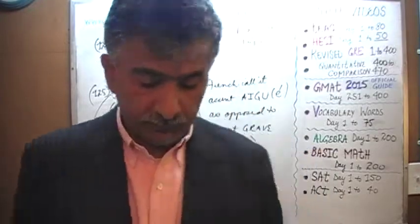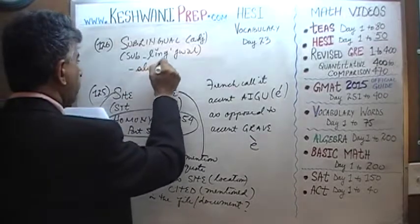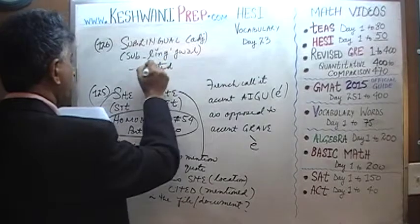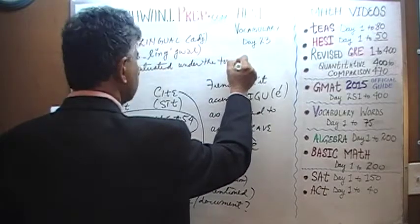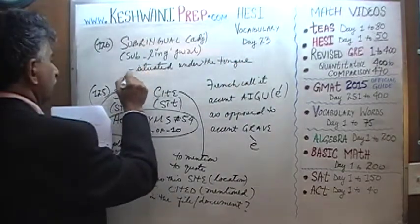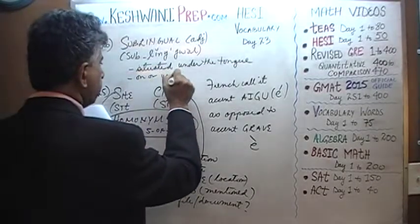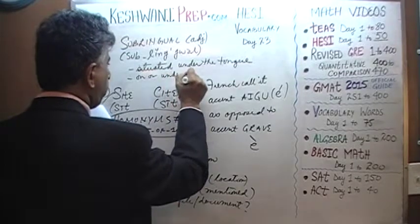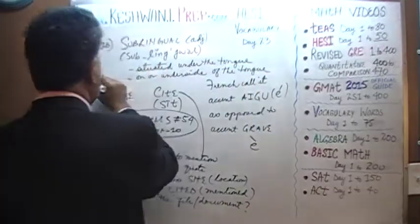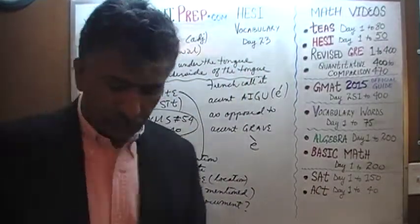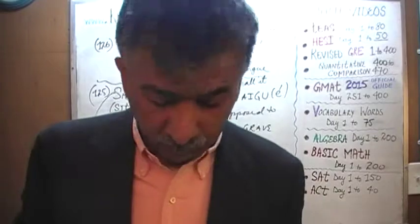Word one-twenty-six: "sublingual." It is an adjective. Sublingual means exactly what it says — it means situated under the tongue, or on the underside of the tongue. If something is located on the underside of the tongue, you say it is sublingual.